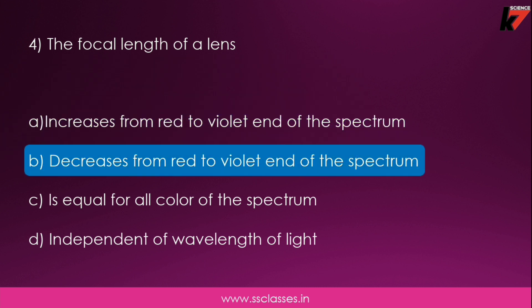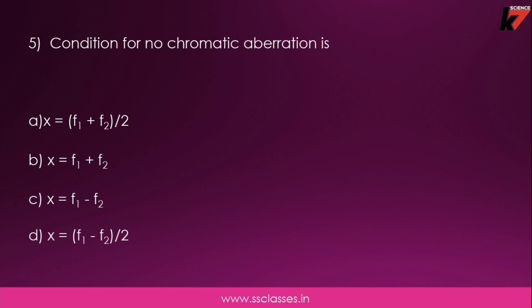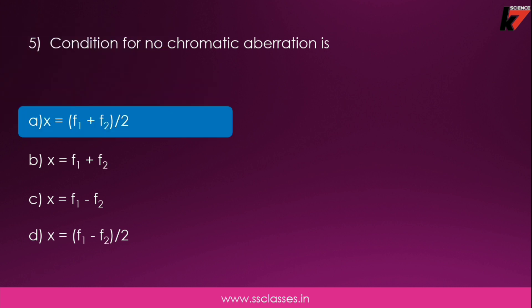Fifth question: what is the condition for no chromatic aberration? The options are: x equals f1 plus f2 upon 2, or f1 plus f2, or f1 minus f2, or f1 minus f2 upon 2. The correct answer is option A: x equals f1 plus f2 upon 2 is the correct condition for no chromatic aberration.